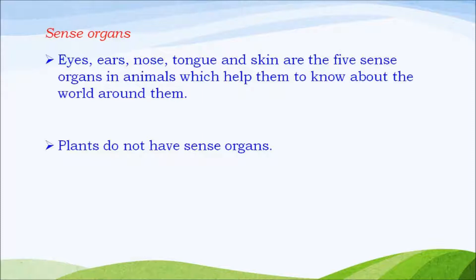Sense organs: eyes, ears, nose, tongue and skin are the five sense organs in animals which help them to know about the world around them. Plants do not have sense organs.